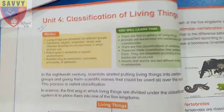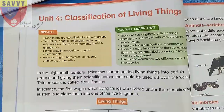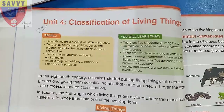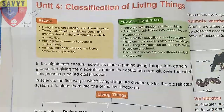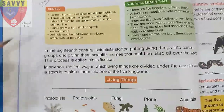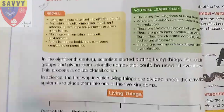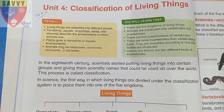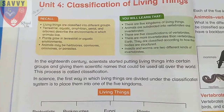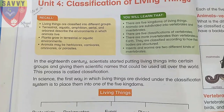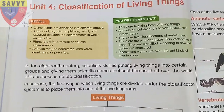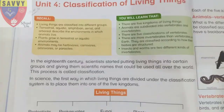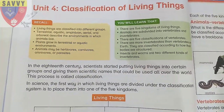Assalamualaikum students of class 5, I hope you all are good. Let's start our reading of chapter number 4: Classification of Living Things. In the 18th century, scientists started putting living things into certain groups and giving them scientific names that could be used all over the world. This process is called classification.